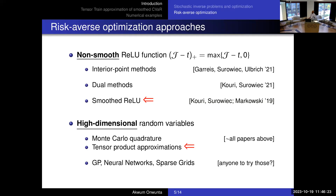Regarding the question about penalizing the tails: what conditional value at risk does is look into the tail of the distribution — it's the expected value of all values above the alpha quantile. Have you tried using importance sampling? No, we haven't used that yet.